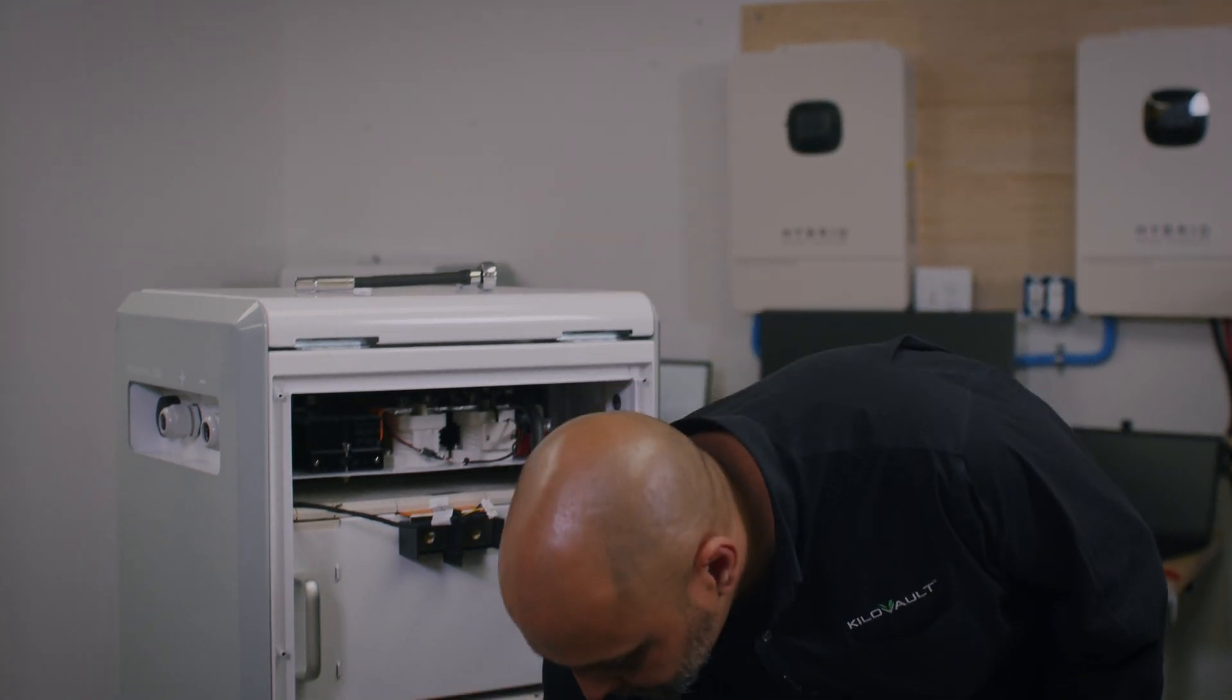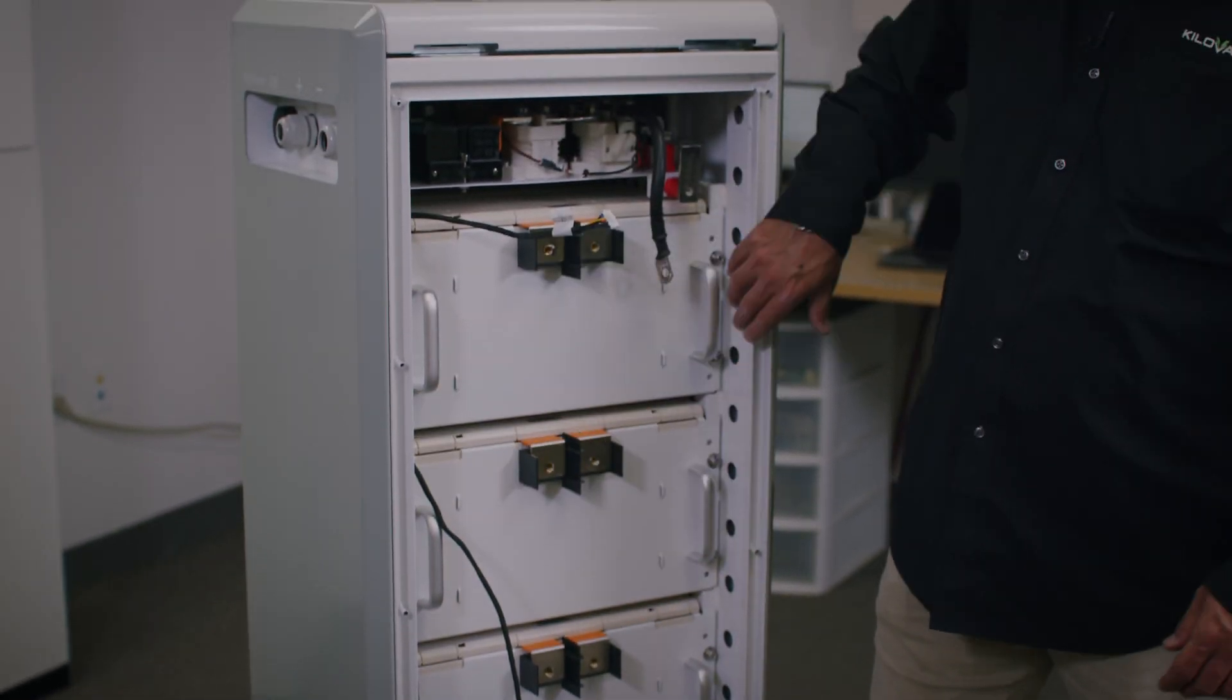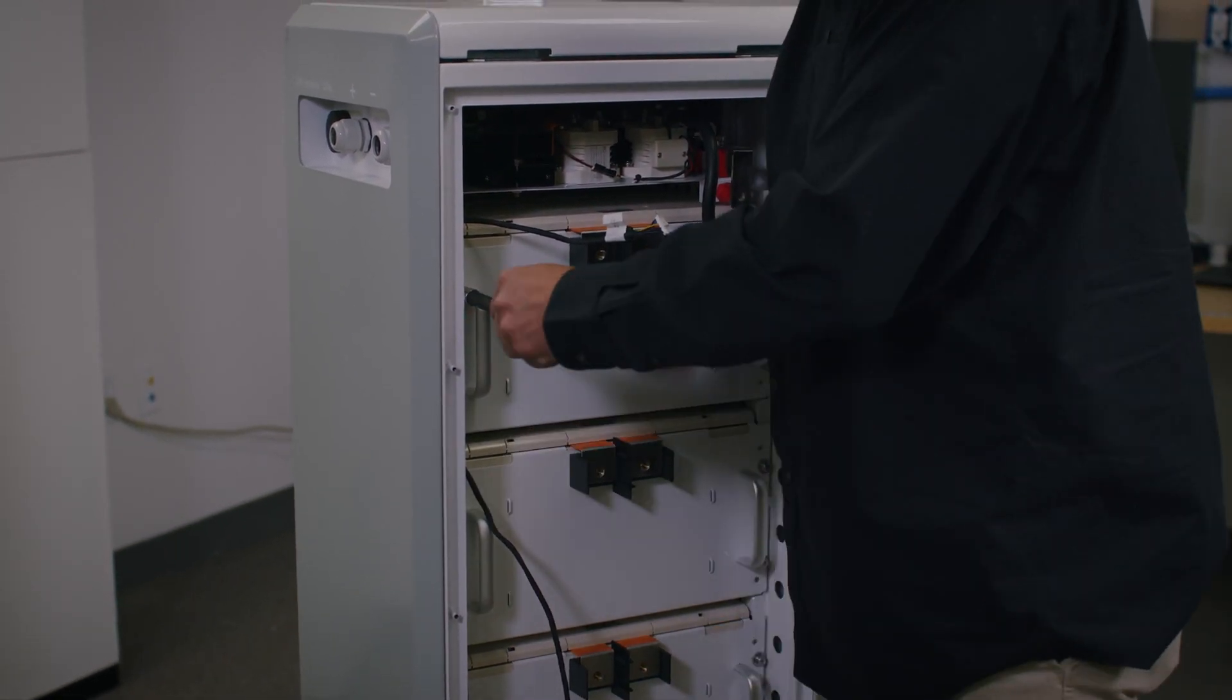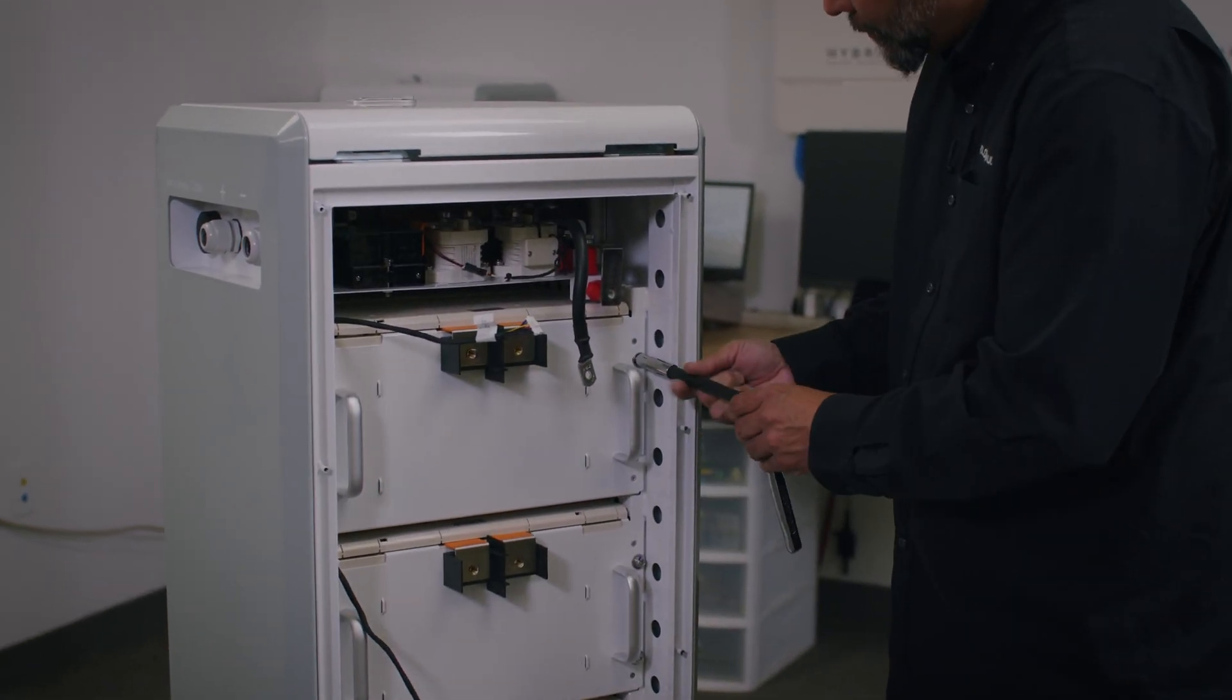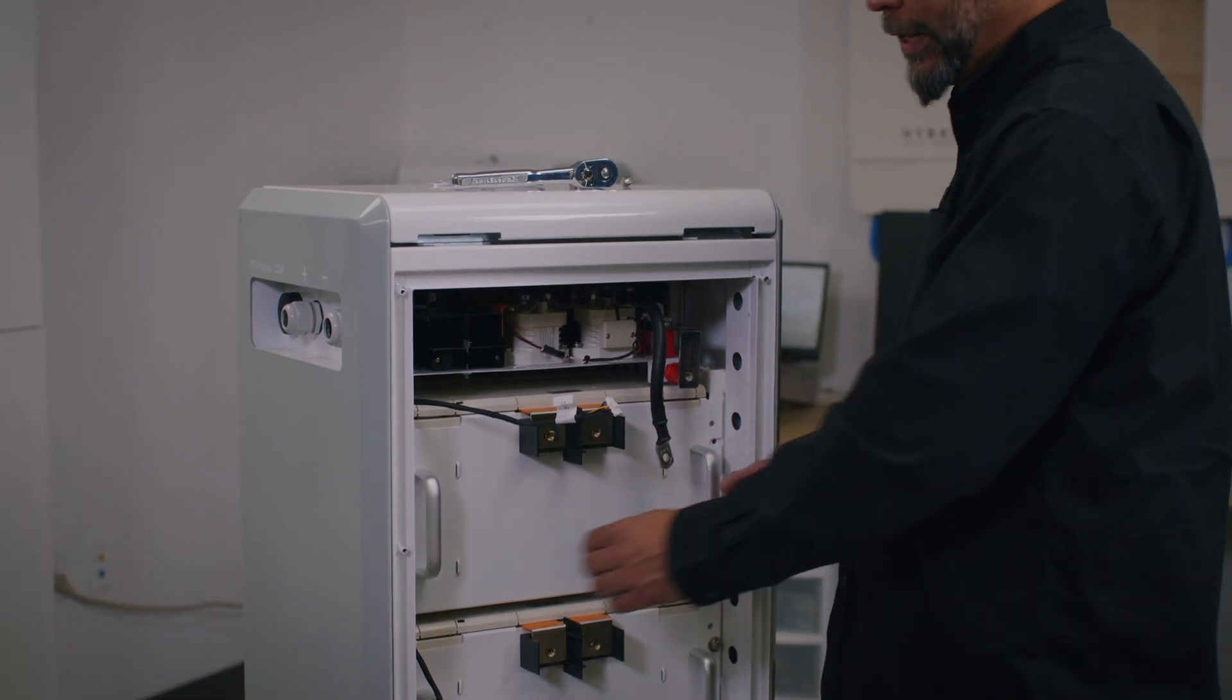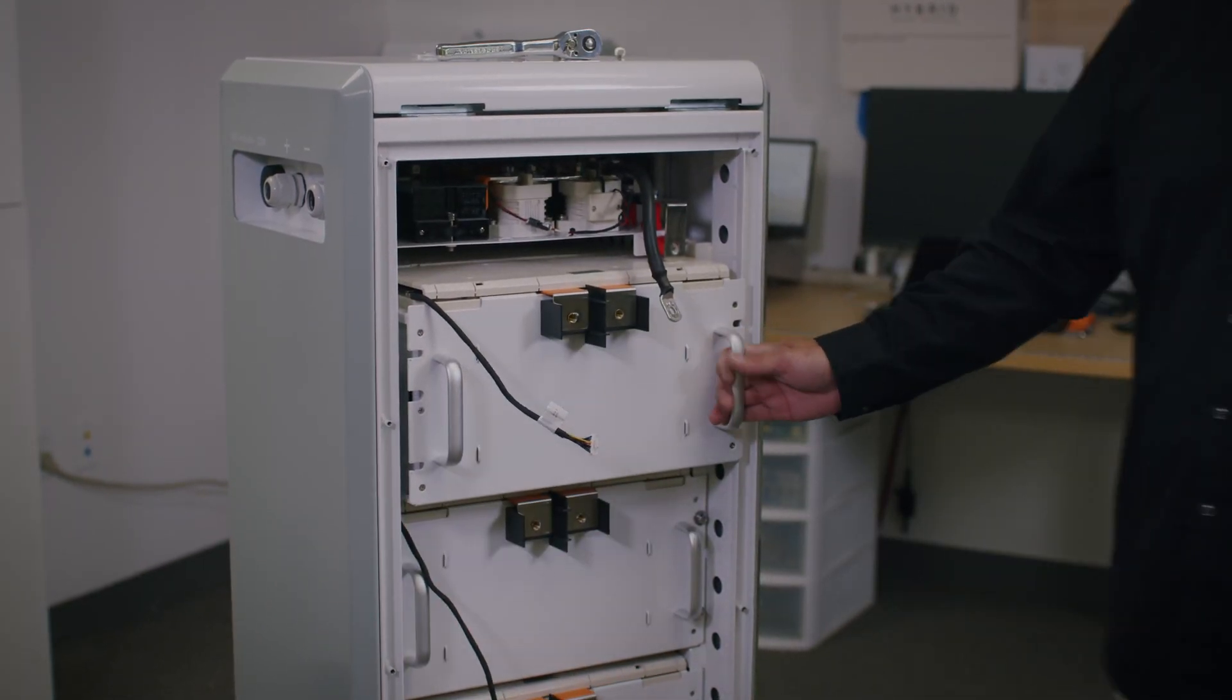Now that we have disconnected all the modules from the BMS and the cables should look like this, let's go ahead and unbolt the four bolts that hold down each module and they will be ready to be removed. Now that all four bolts have been removed, the module just slides out, making it easy to remove from the actual bank.